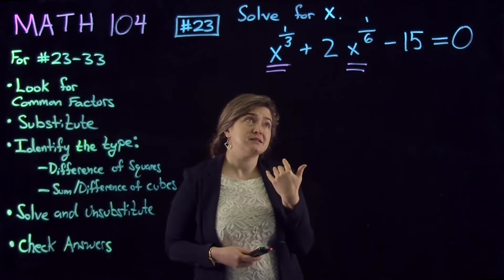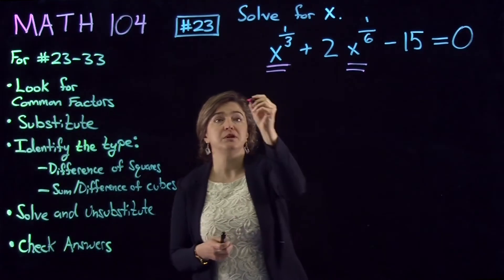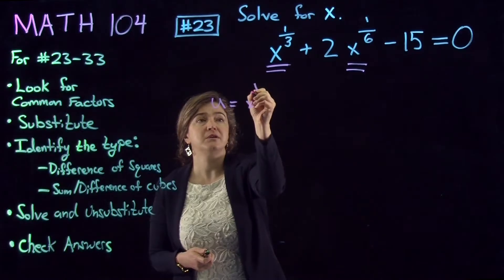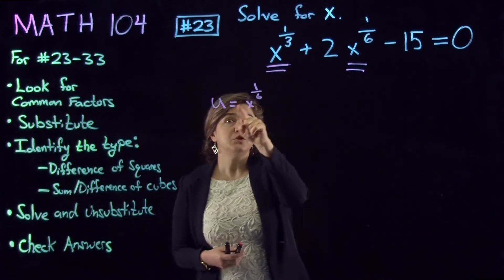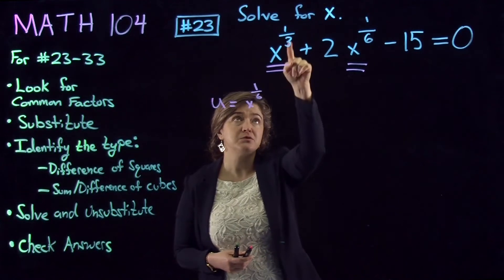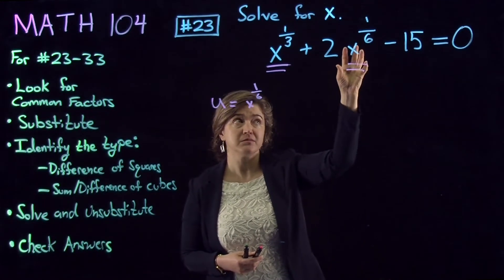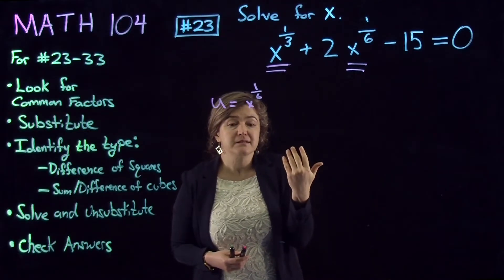So, my first instinct is to try to do a u-substitution by setting u equal to x to the power one-sixth. Now, if u is x to the power one-sixth, and we just discussed that x to the power one-third is the square of x to the power one-sixth, the next step would be to raise both sides to power two.